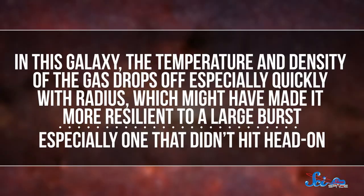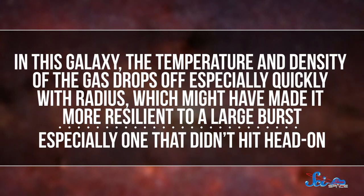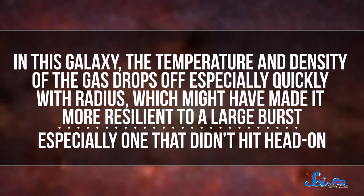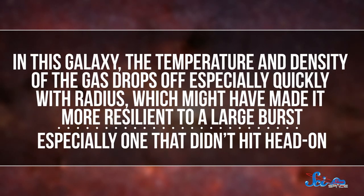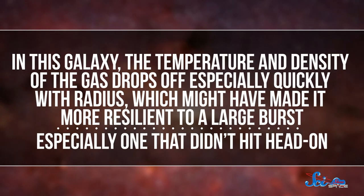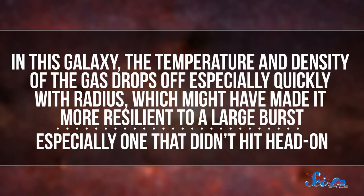With lots of these bursts, any cool gas from around the core of the galaxy can be destroyed, which is why the first team had ruled out the possibility of an explosion. But in this galaxy, the temperature and density of the gas drops off especially quickly with radius, which might have made it more resilient to a large burst, especially one that didn't hit head-on.